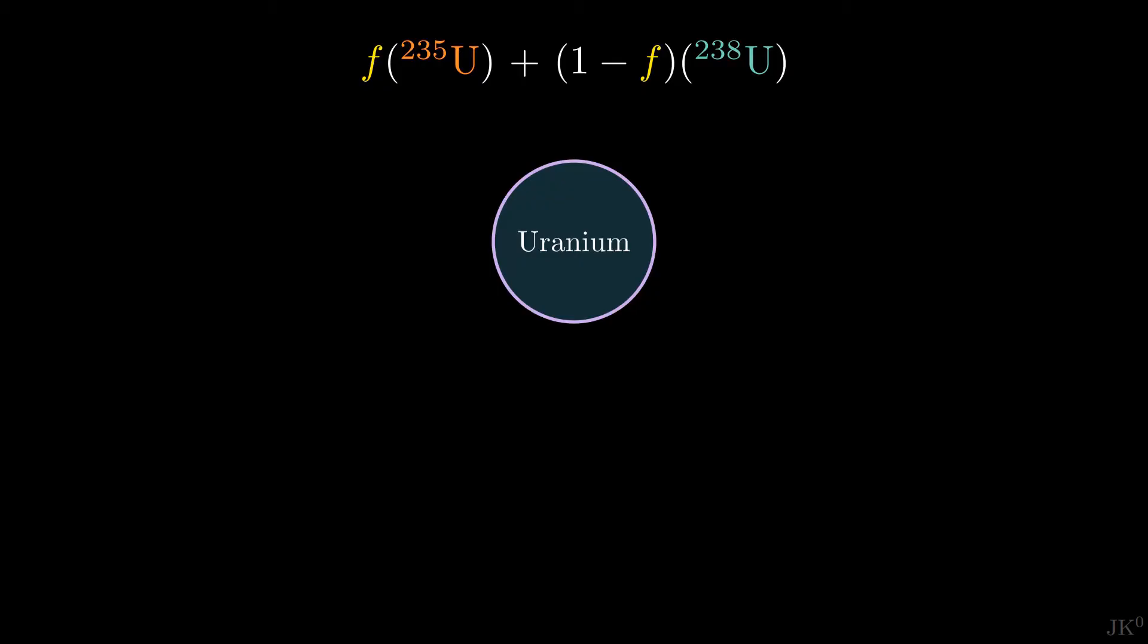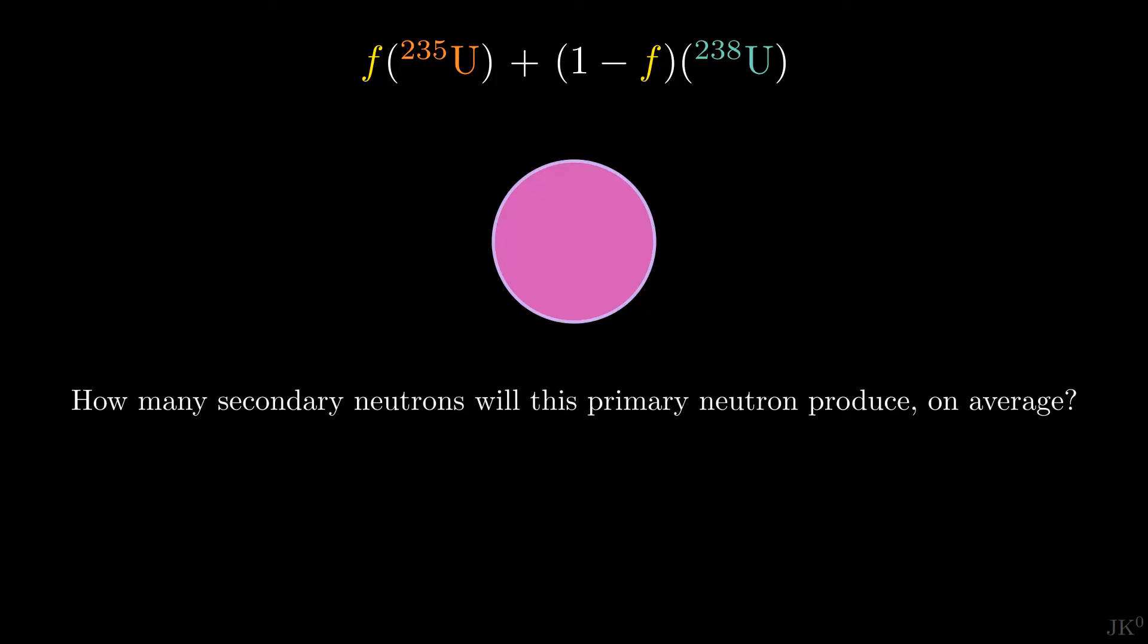To quantify its effect, let us imagine a lump of uranium with a fraction f of U235 and the remaining fraction made of U238. Now we shoot a neutron at this lump. The question that we need to answer is, how many secondary neutrons will this primary neutron produce on average? This average number of secondary neutrons is called criticality factor, or sometimes reproduction number, and is denoted by K.